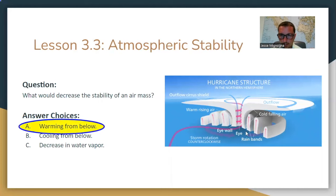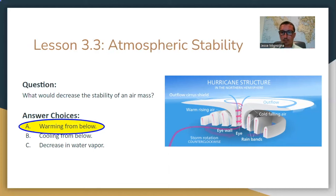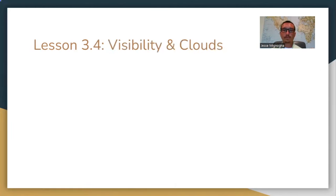When you have warm air from below, that air wants to rise because warm air likes to rise and cold air likes to fall. That's going to decrease stability because you get those updrafts and downdrafts. When you've got warm air below, you're going to get unstable air conditions. I'll close out here — this video is getting long — and I'll go over visibility and clouds in my next video.